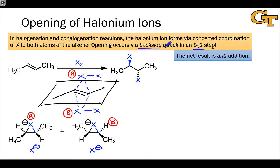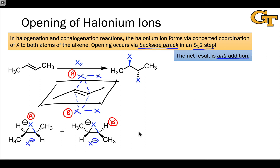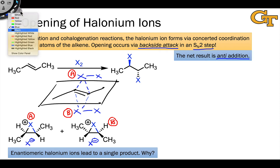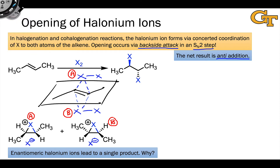So we're going to get a net anti-addition across the carbons of the alkene, as evoked by the product structure here, with one X above the plane of the screen and one X behind the plane of the screen, when the carbon-containing backbone is drawn as it was in the starting trans-2-butene. Only a single product is drawn here, which may seem odd.